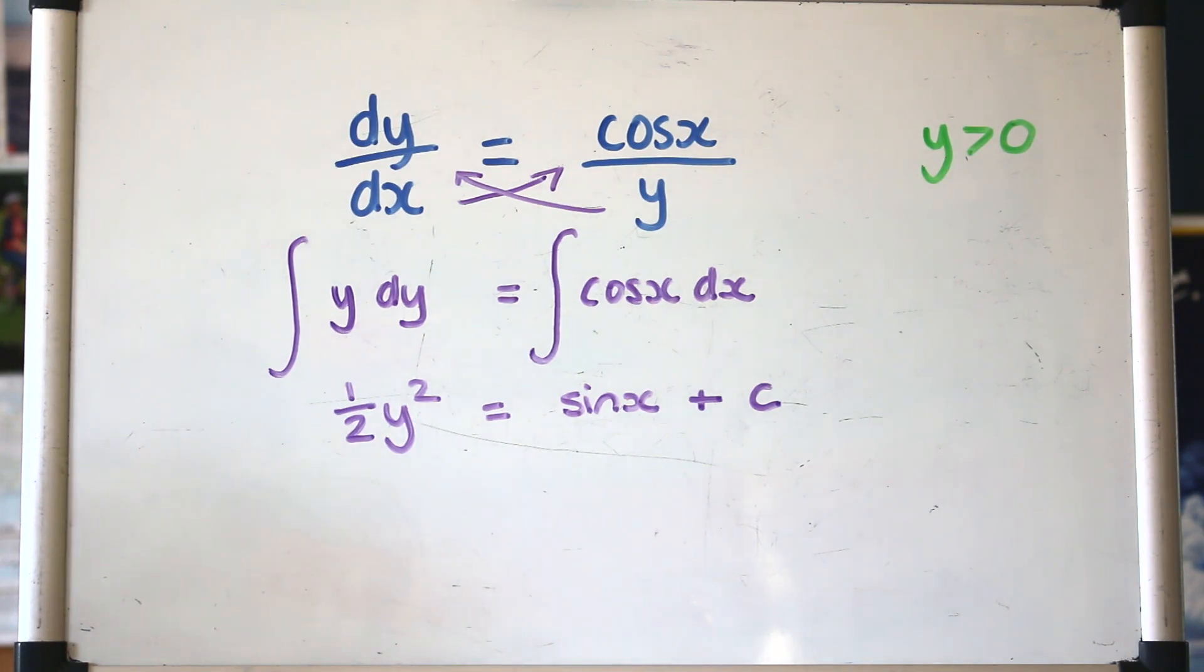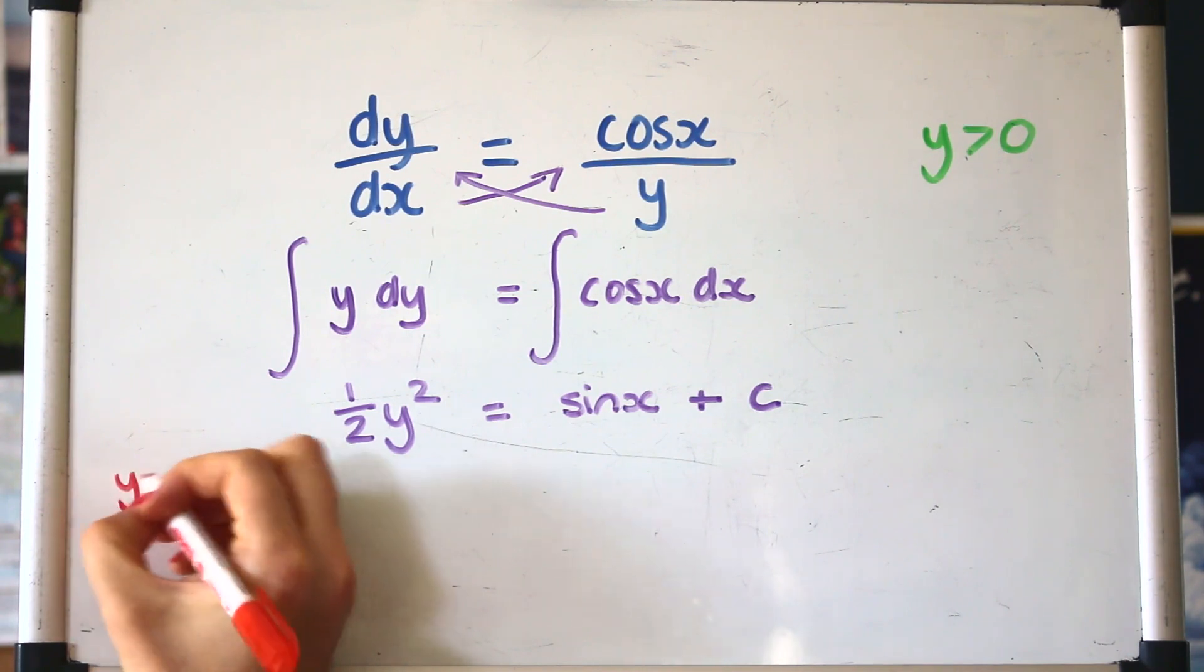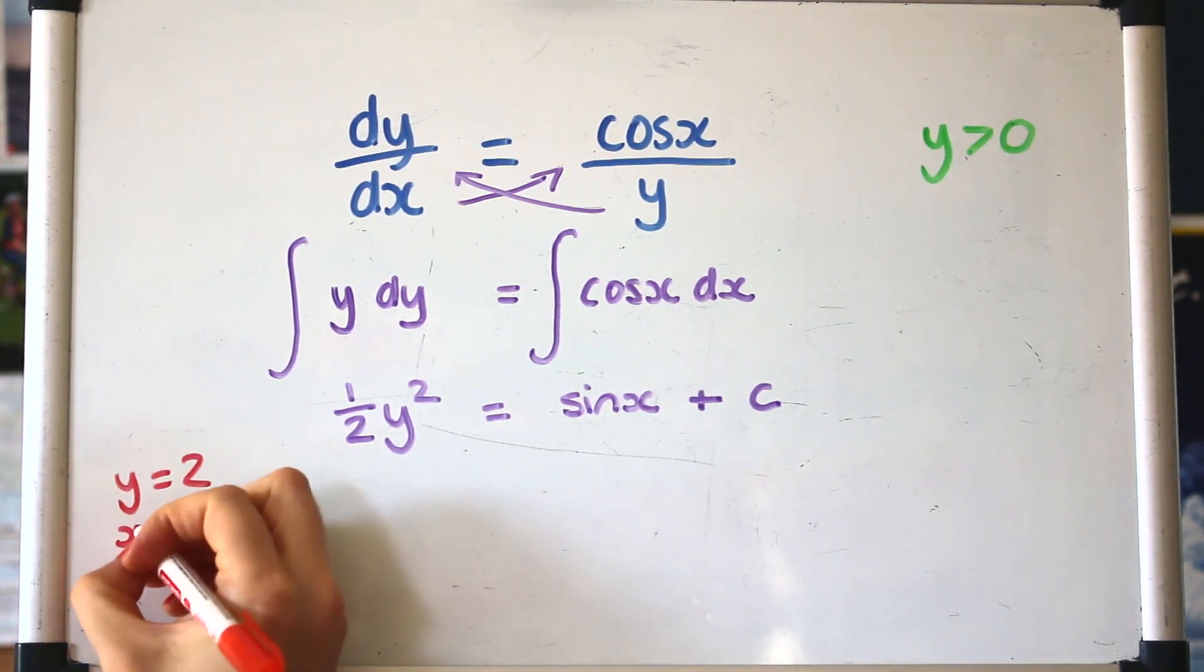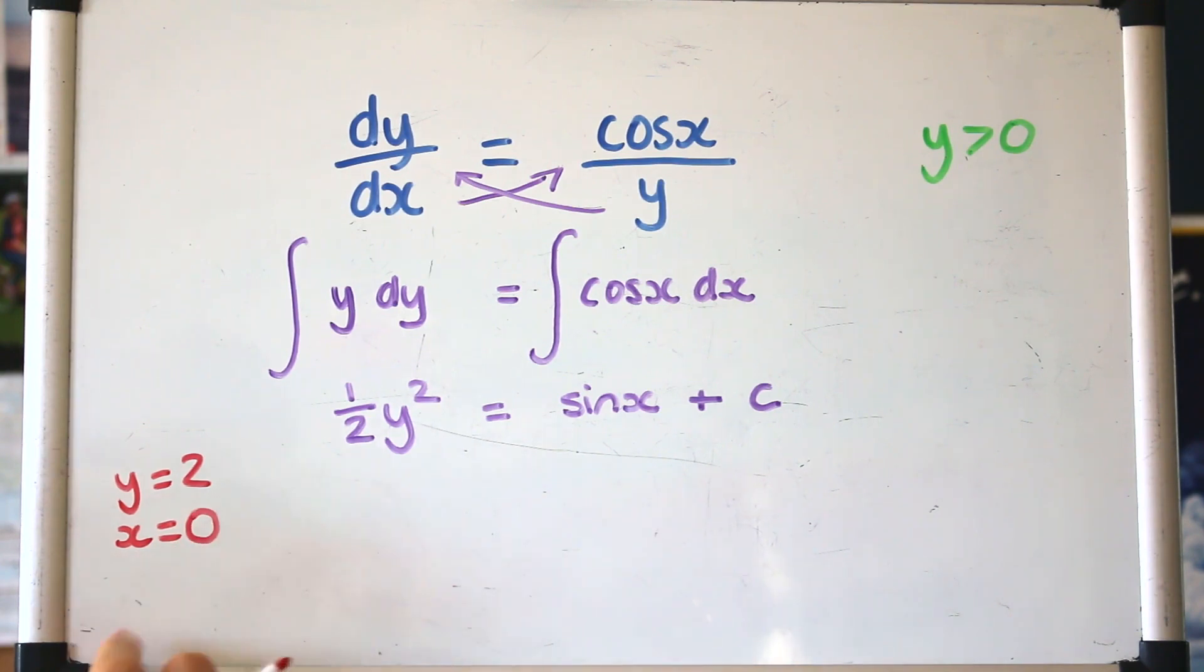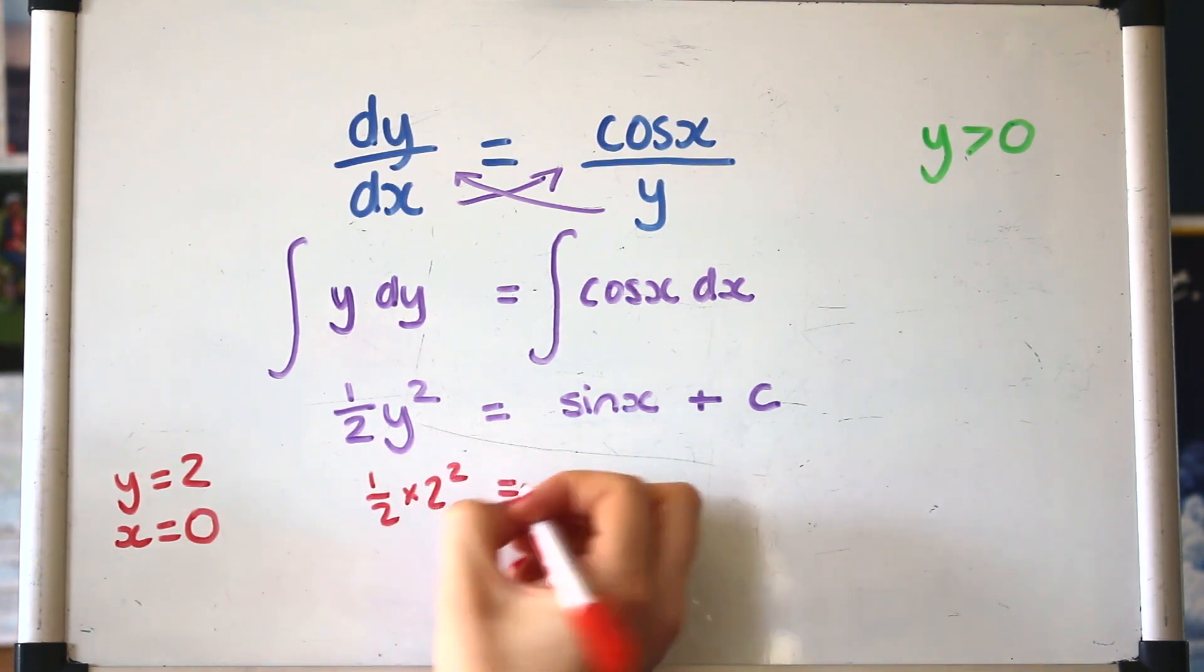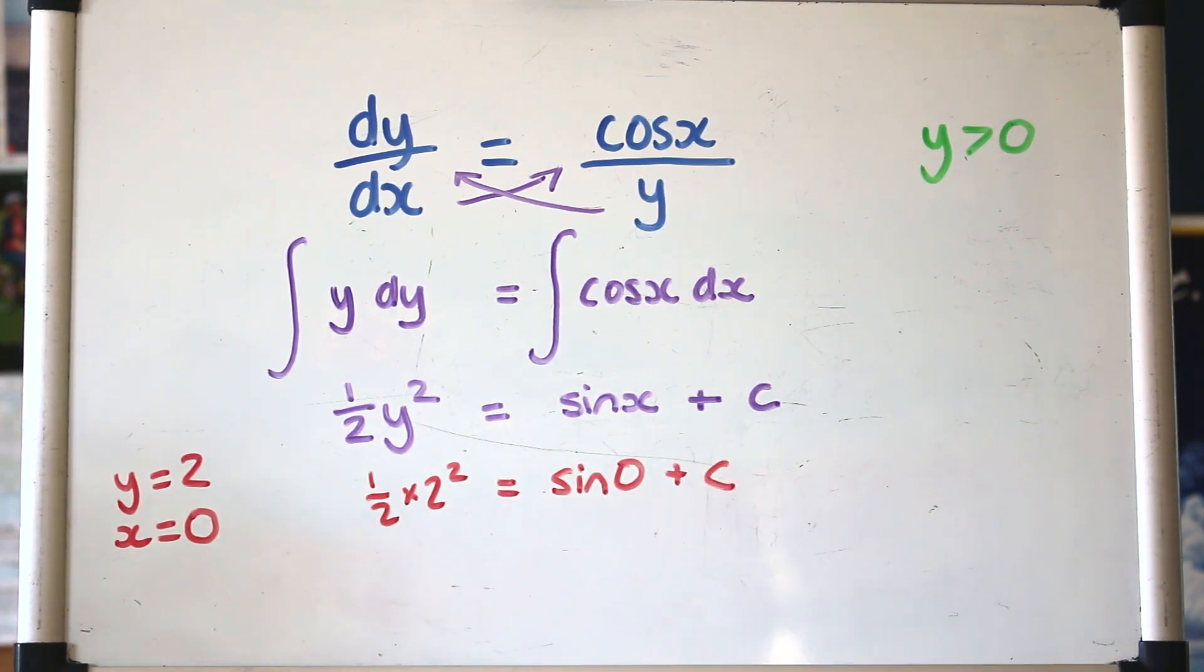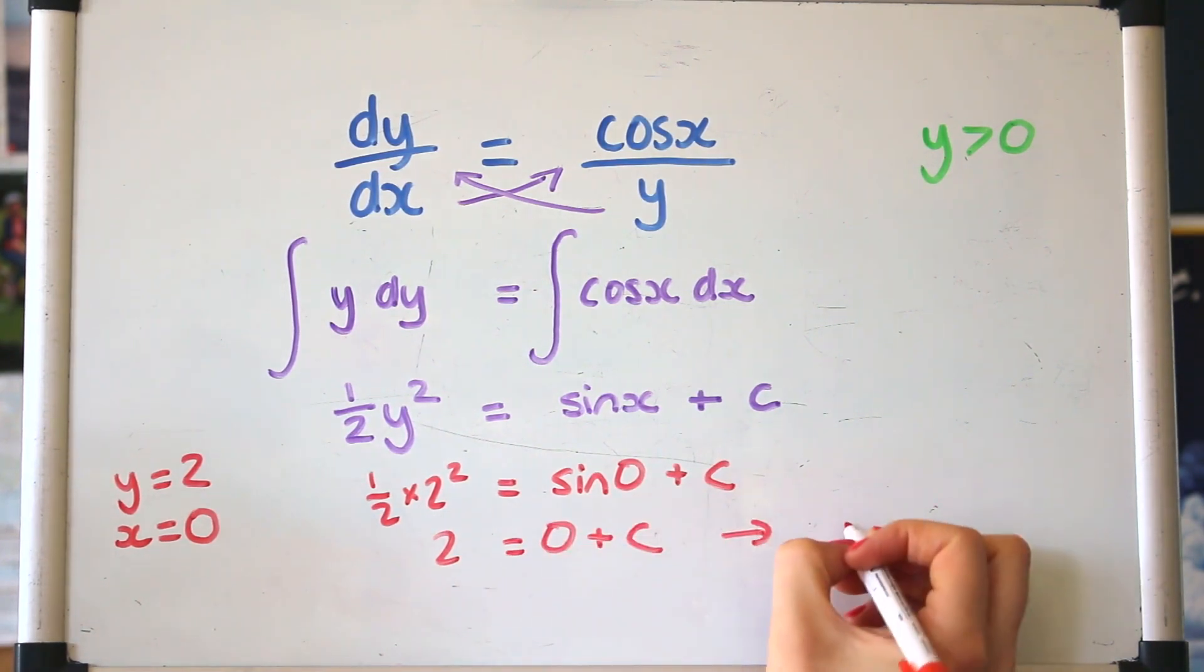Now, if you're given some more information and you're given a value of x and y, then you can go further and find a particular solution, and that means you can use your x and y that you're given to find the constant. So let's try that. Let's say that y is 2 when x is 0, so that's going to be a new piece of information that we can apply to here. We'll just pop that into the general solution to get a half times 2 squared equals sin(0) plus c, and then solving that, so we find that c is 2.